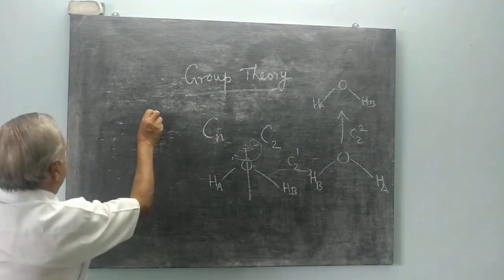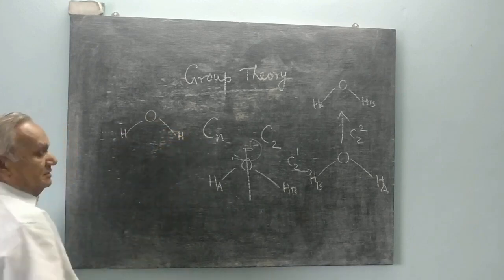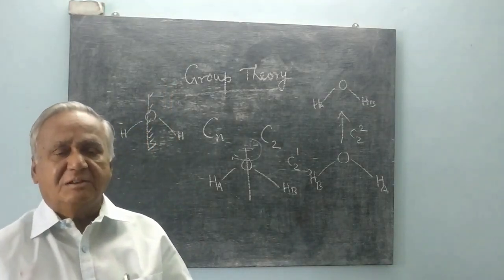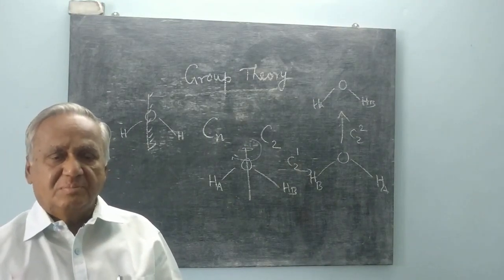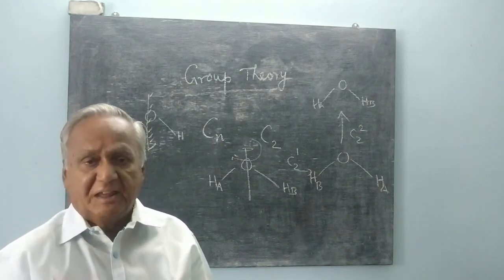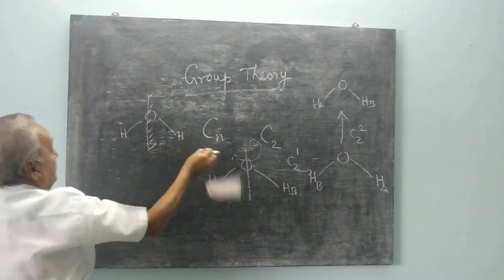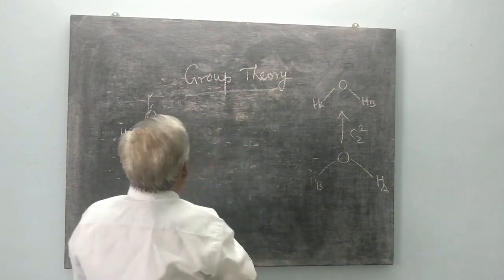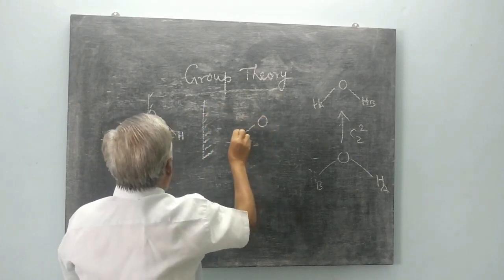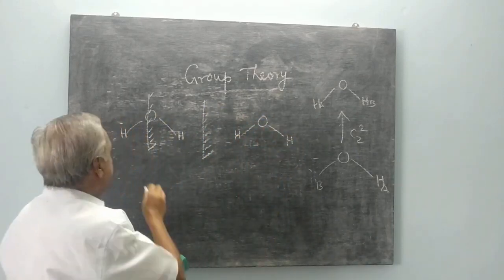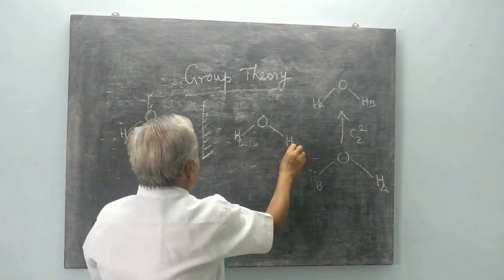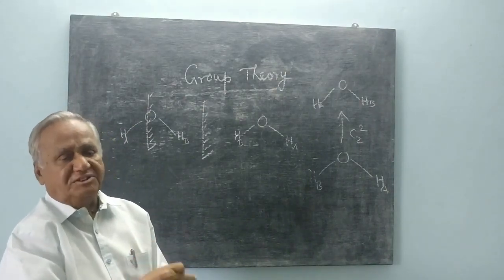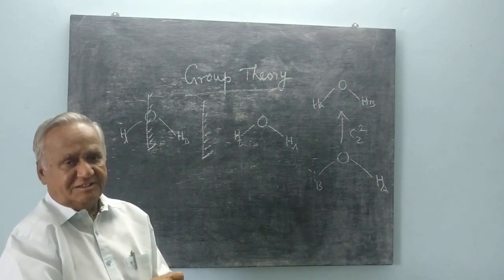For example, taking the water molecule, if I put a plane here and reflect the molecule in this plane, B will appear here and A will appear here. So this plane produces an indistinguishable structure. The operation is called reflection, denoted as sigma.